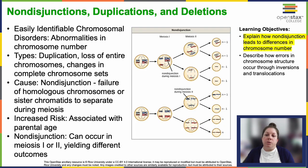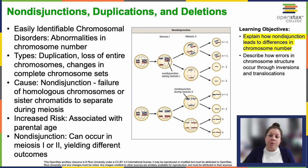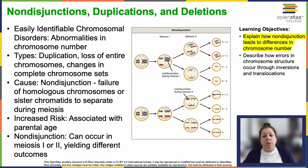Among chromosomal disorders, abnormalities in chromosome number are readily identifiable through a karyogram. These abnormalities encompass duplications, losses, or changes in complete sets of chromosomes. They occur due to non-disjunction, where homologous chromosomes or sister chromatids fail to separate properly during meiosis. Non-disjunction risk increases with parental age, both maternal and paternal.